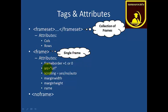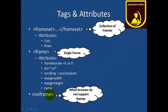The Frame tag indicates a single frame. Other attributes include: frame border, SRC — which specifies the source, meaning which page to display inside the frame — scrolling, margin width, margin height, and so on. These are the normal attributes. And there is the NoFrames tag — if a browser does not support frames, the NoFrames tag content will be shown instead.